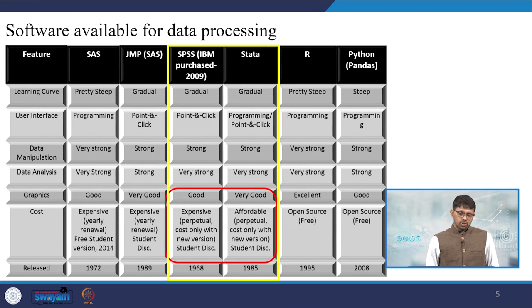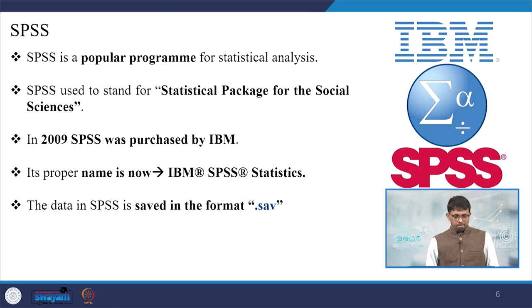The software available for data processing most frequently used by scholars are these two: SPSS and Stata. I will refer the hands-on materials to you on how you can practice for your own research work. SPSS stands for Statistical Package for Social Sciences.